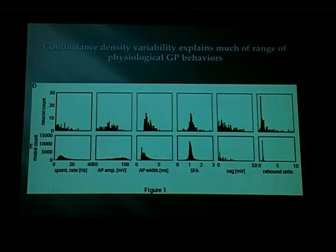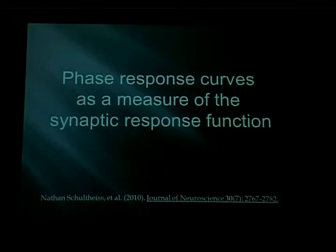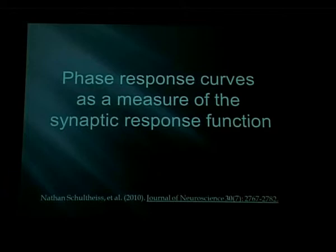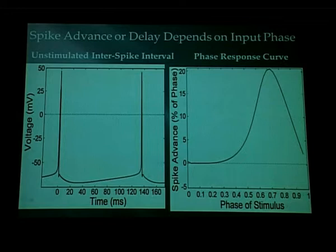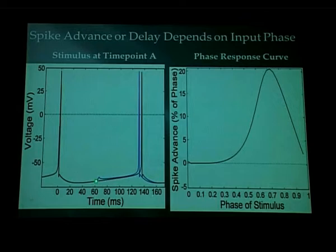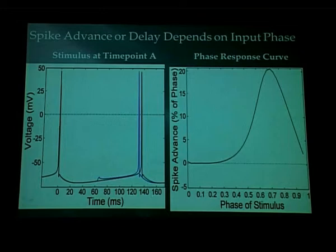We use our model for studies of synaptic integration. The first study was done by Nathan Schulteis on phase response curve analysis. A phase response curve is determined by disturbing an oscillating pacemaking background at different points in the spike cycle — essentially applying a brief current injection — and measuring the resulting shift in the timing of the next spike. The disturbance leaves the next spike to come a little earlier if excitatory, and the effect depends on when in the cycle it occurs.